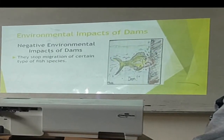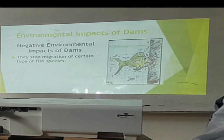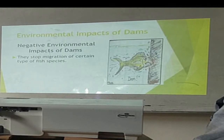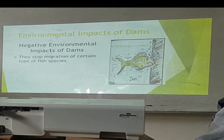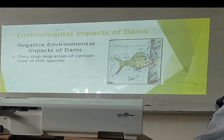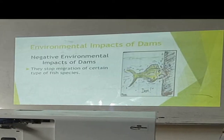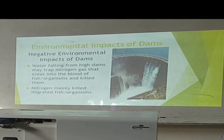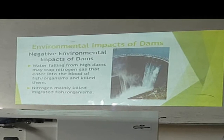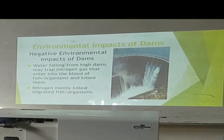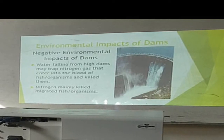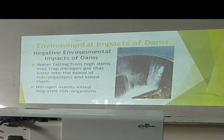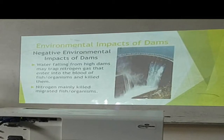Dams stop the migration of fish and other organisms, due to which ecosystems are affected. Water falling from a high dam may trap nitrogen gas that enters into the blood of water organisms and kills them. Nitrogen mainly kills migrating fish organisms.